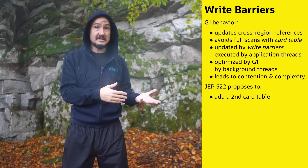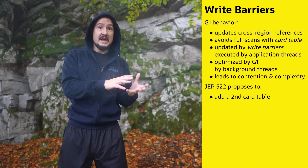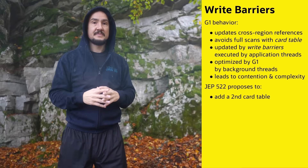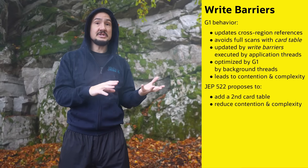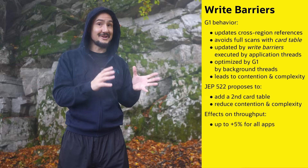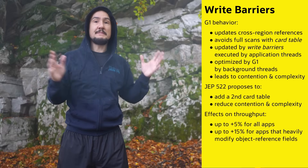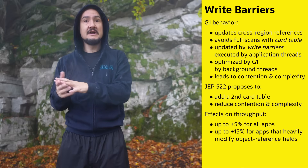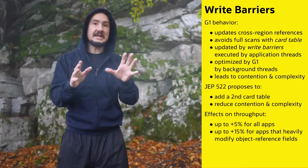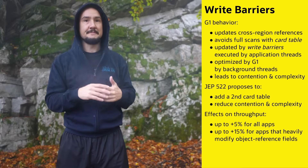JEP 522 introduces a second cart table so that application threads can work with one and the G1 optimizer threads with another, plus a mechanism for swapping and reconciling them. That reduces contention and the need for synchronization and also simplifies the write barriers. According to the JEP, that simplification alone leads to throughput gains of up to 5% across the board, with applications that heavily modify object reference fields further benefiting from the reduced contention and seeing improvements of up to 15%. Pause times and thus latencies decrease slightly. JEP 522 is already integrated into JDK 26 and available in the early access builds.